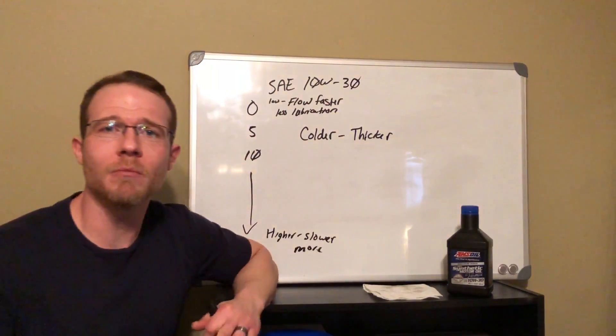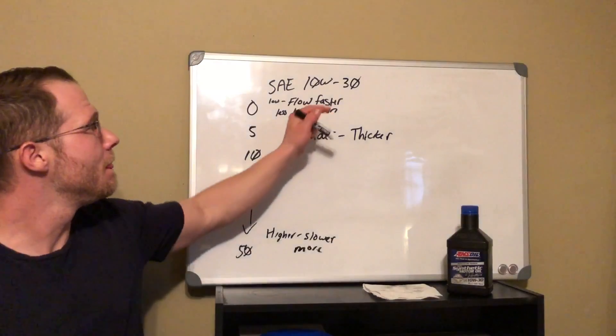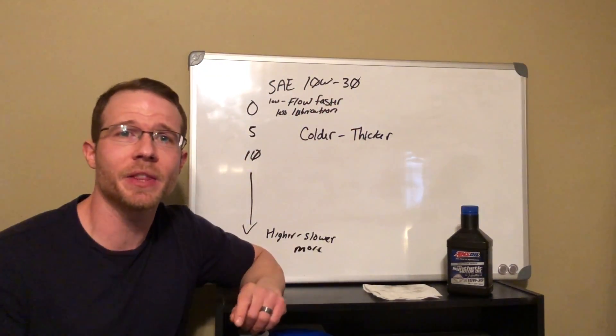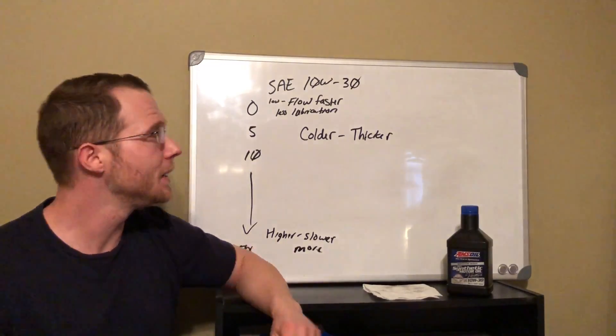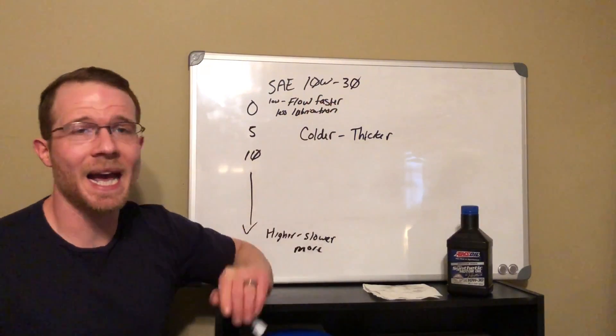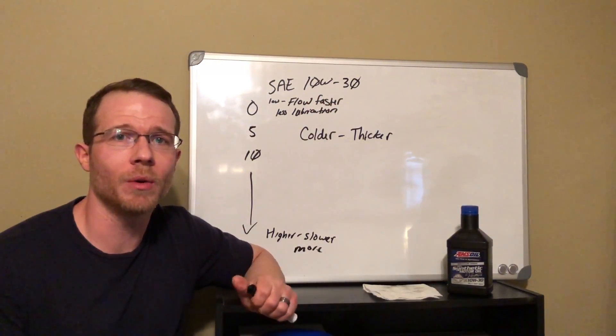So this is where we get multi-grade oil. Our base oil is a 30 weight. It acts like a 30 weight at 212 degrees Fahrenheit. But when it's cold, it acts like a 10 weight oil.